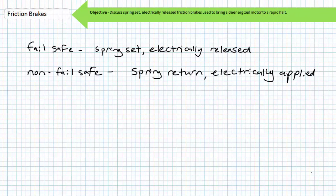Friction brakes come with two different designations and their description says it all. Fail-safe brakes require power to disengage the brake. Otherwise, spring pressure applies the brakes. Fail-safe brakes are also called spring-set electrically-released brakes. They're additionally known as power-off or safety brakes. Non-fail-safe brakes require power to apply the brake. Otherwise, spring pressure disengages the brakes. Non-fail-safe brakes are also called spring-return electrically-set brakes. They're additionally known as power-on brakes.